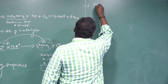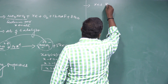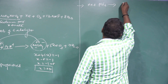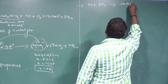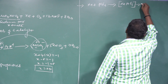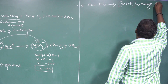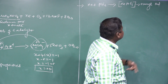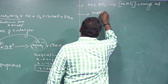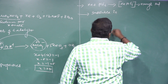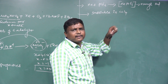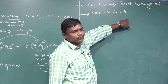Xenon reacts with platinum hexafluoride to give a compound named XePtF6. The color of this compound is orange-red. It is insoluble in CCl4, an organic solvent.